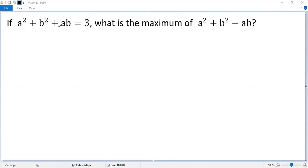Given a squared plus b squared plus ab equals 3, let's denote that as condition 1. To figure out the maximum value of a squared plus b squared minus ab, let's express it in terms of the given condition. So we get a squared plus b squared plus ab minus 2ab. We know this part equals 3, so we get 3 minus 2 times ab.